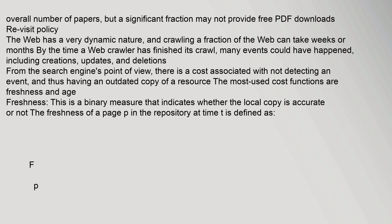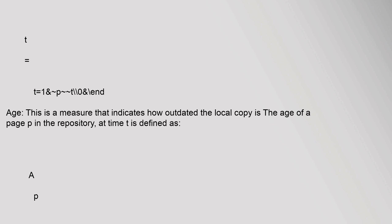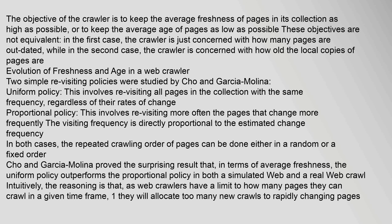The web has a very dynamic nature, and crawling a fraction of the web can take weeks or months. By the time a web crawler has finished its crawl, many events could have happened including creations, updates, and deletions. From the search engine's point of view there is a cost associated with not detecting an event and thus having an outdated copy of a resource. The most used cost functions are freshness and age. Freshness is a binary measure that indicates whether the local copy is accurate or not. Two simple revisiting policies were studied by Cho and Garcia-Molina: the uniform policy, which involves revisiting all pages with the same frequency regardless of their rates of change, and the proportional policy, which involves revisiting more often the pages that change more frequently.